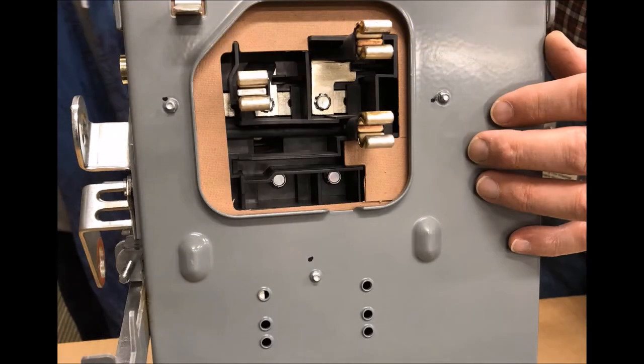Today I'm going to show you the difference between a 3-pole and a 4-pole I-Line busway plug-in unit. Here we have a 3-pole device. You can see the three stab assemblies here, here, and here.